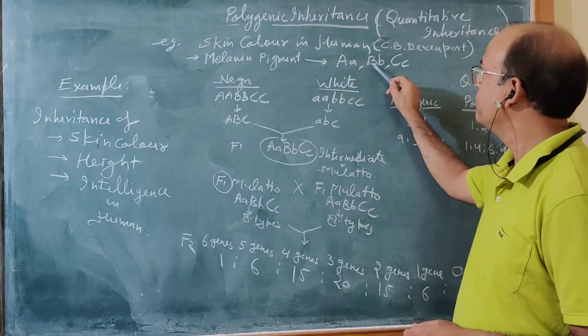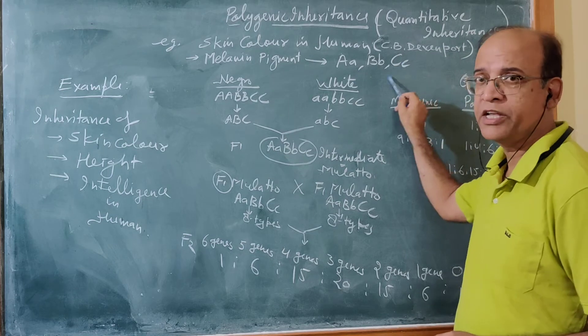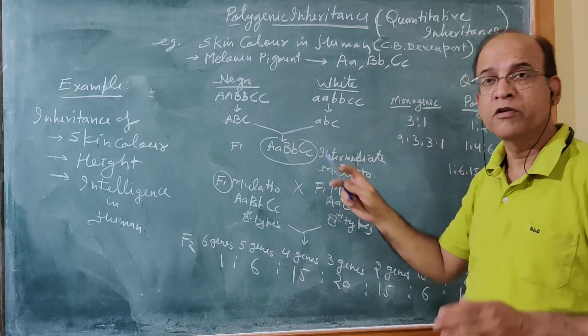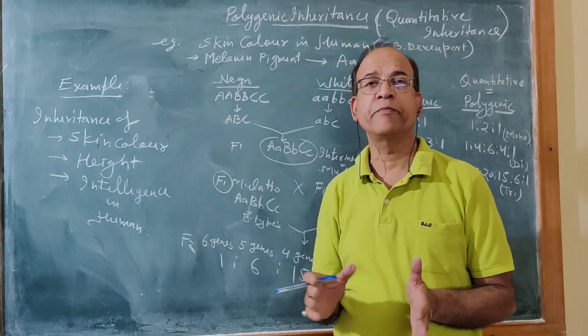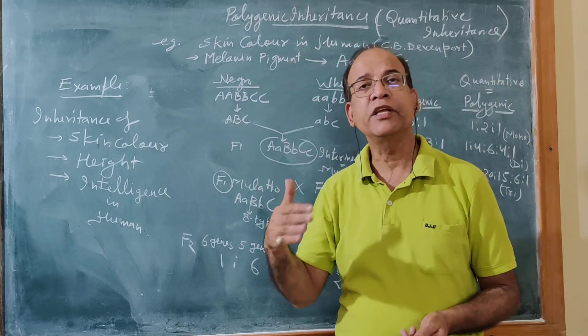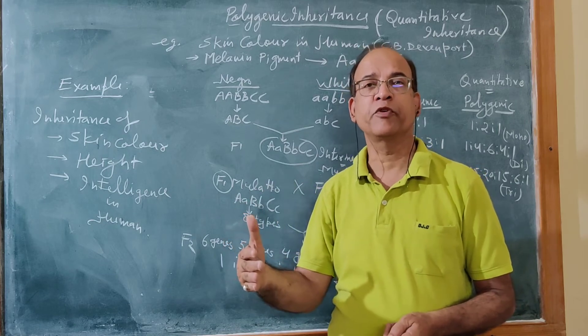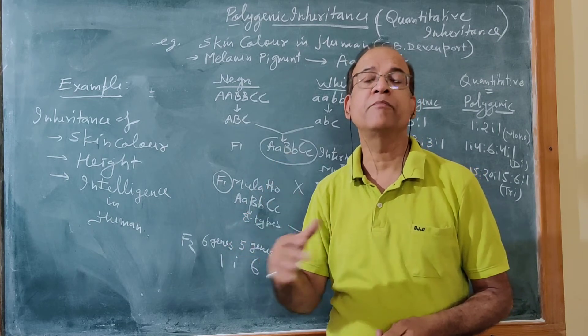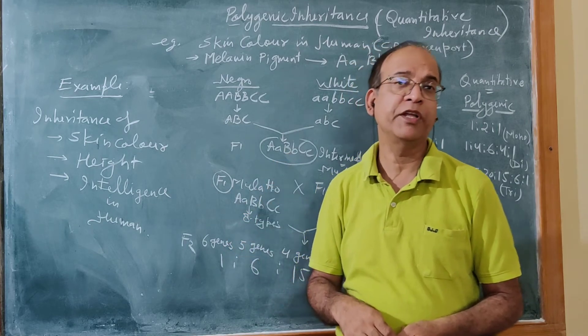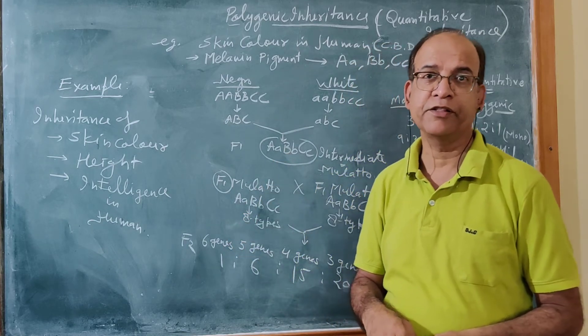For the production of melanin pigment, three genes are responsible: A, B, and C. That is why skin color inheritance is an example of polygenic inheritance.